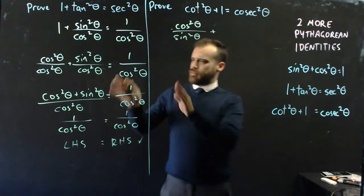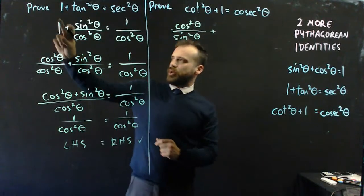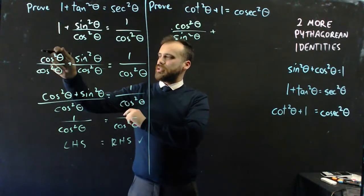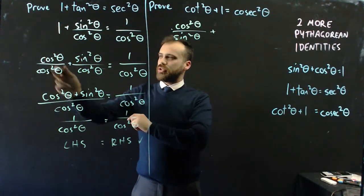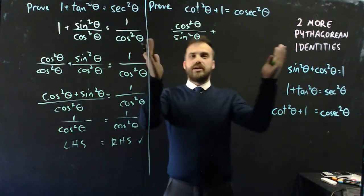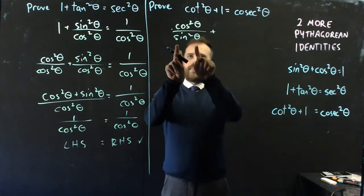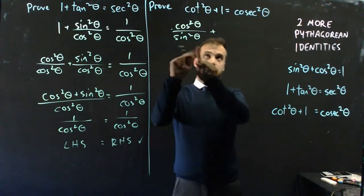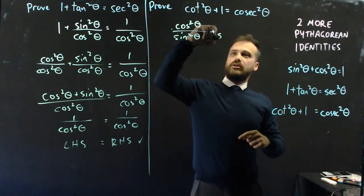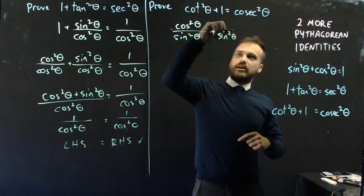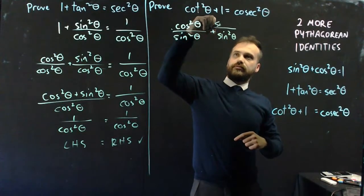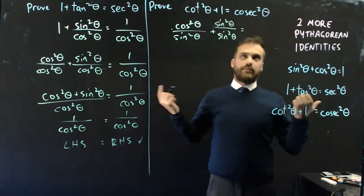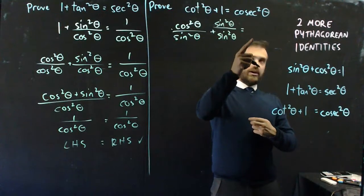We know from the previous example that when a 1 appeared, it was nice to write it as cos squared theta over cos squared theta so we could smush two things together. In this case, the denominator is sine squared theta, so I'm going to write sine squared theta over sine squared theta instead of the number 1.